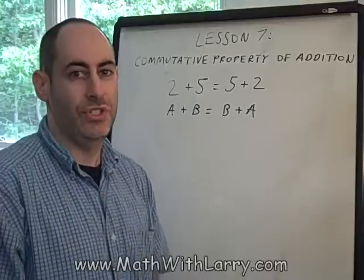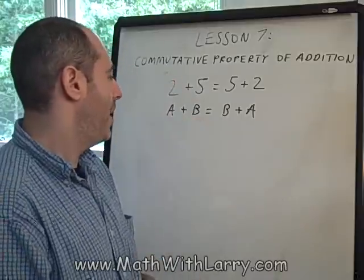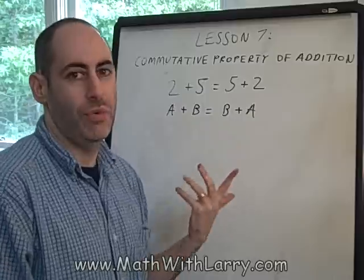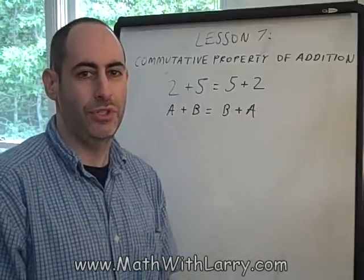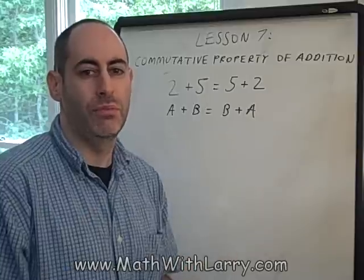And sometimes a test question is designed to see if you simply know that name. They'll show you something like this and say, what property is this demonstrating? It's called the commutative property of addition. The order in which we add two numbers doesn't matter.